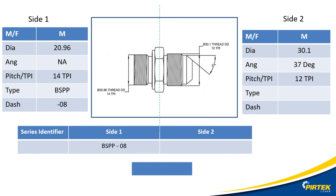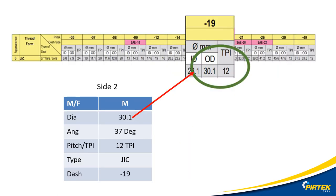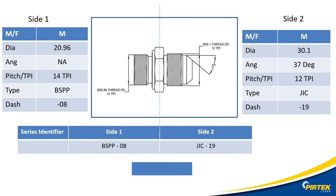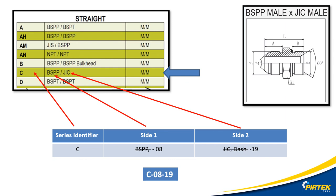Now let's work on side two. Side two is either a four or six — at 37 degrees, it's a JIC thread form. The OD is 30.1 mm, which matches a dash 19. We have all thread information, and it looks like it's a series C — BSPP first and JIC second — so it's a C-08-19. Be aware that images in the catalogue might not represent the orientation of the fitting; in the image shown, BSPP is actually on the right-hand side. Always use the series identification numbering system to identify adapters.